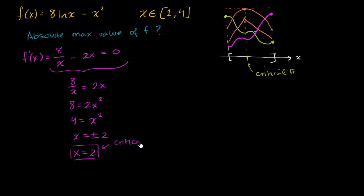Have we found all the critical numbers? The only number in the interval that makes f prime of x equal to zero is x equals 2. As for where f prime is undefined, that would only happen if x equals 0 were in the denominator, but 0 is not in the interval. So the only critical number in the interval is x equals 2.